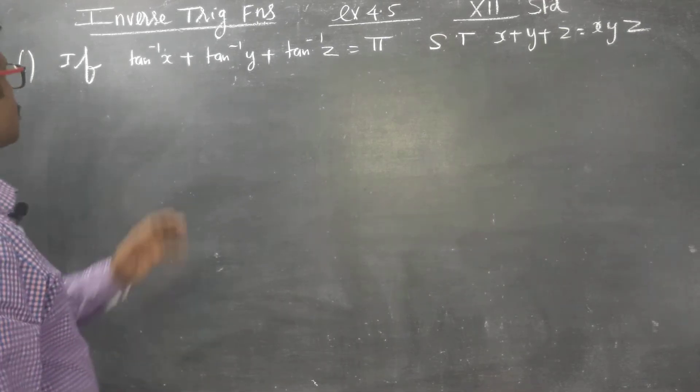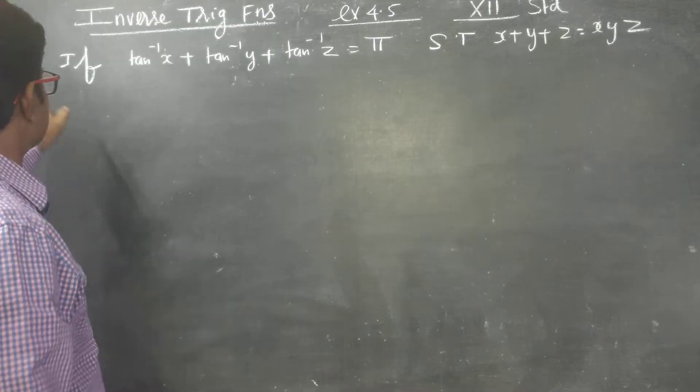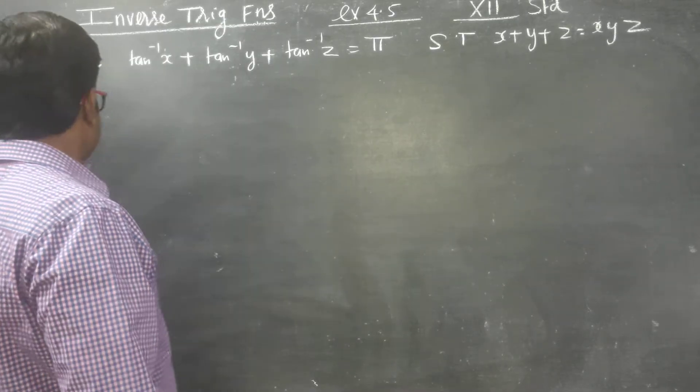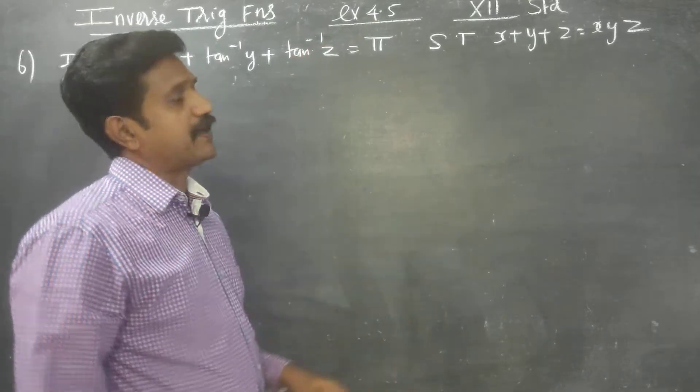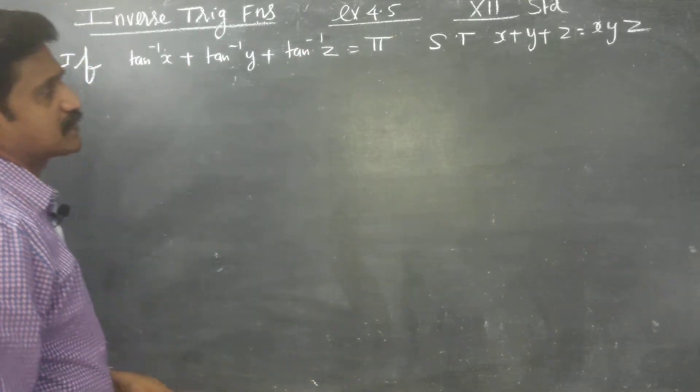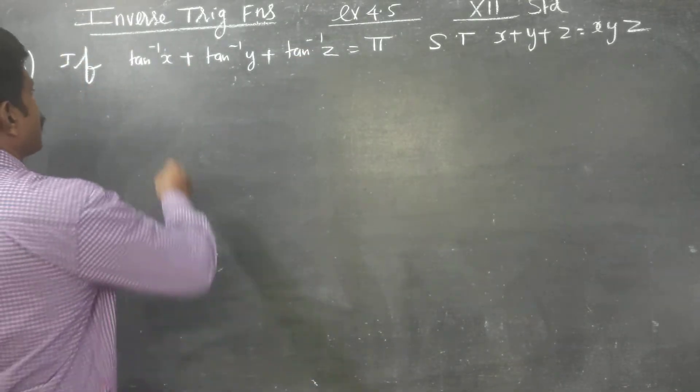Exercise 4.5, 12 standard, inverse trigonometric functions. Problem number 6: It has been given tan inverse of x plus tan inverse of y plus tan inverse of z equal to pi. Show that x plus y plus z equal to xyz.